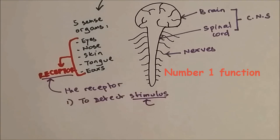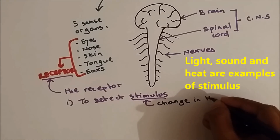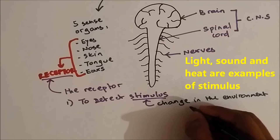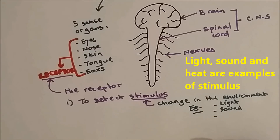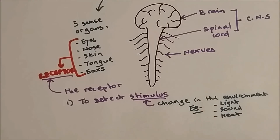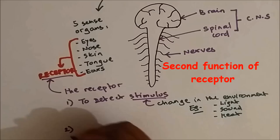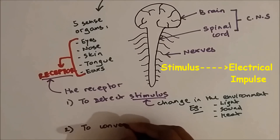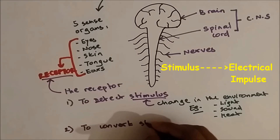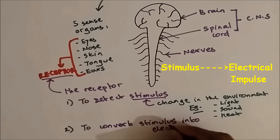What is stimulus? Stimulus is the change in the environment. Examples of change in the environment could be light, sound, or heat. The second function of the receptor is to convert stimulus into electrical impulse.